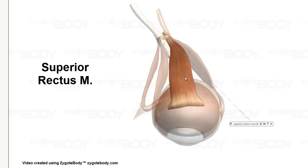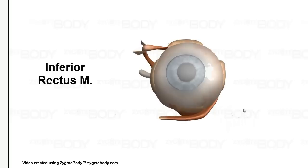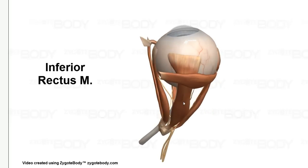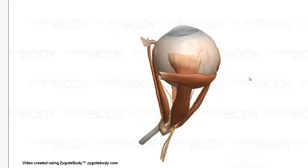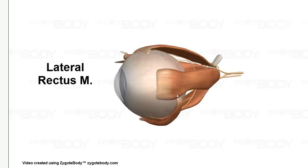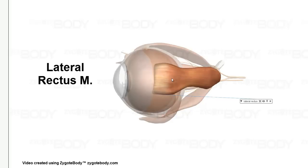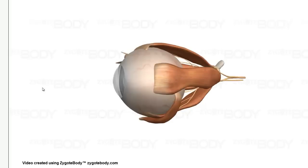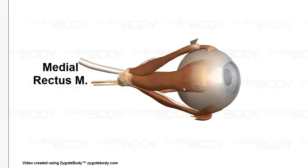At the top, we are going to have the superior rectus muscle. If we have a superior rectus muscle, then we must have an inferior rectus muscle. So this is the inferior rectus muscle. Then we have a lateral rectus muscle. And if we have a lateral rectus muscle, well, we have a medial rectus muscle.